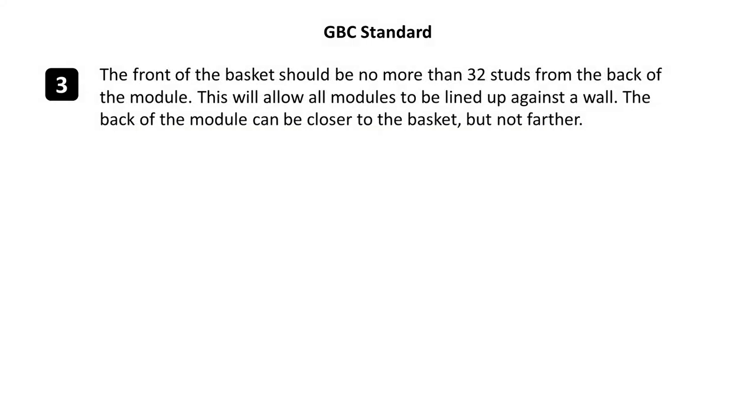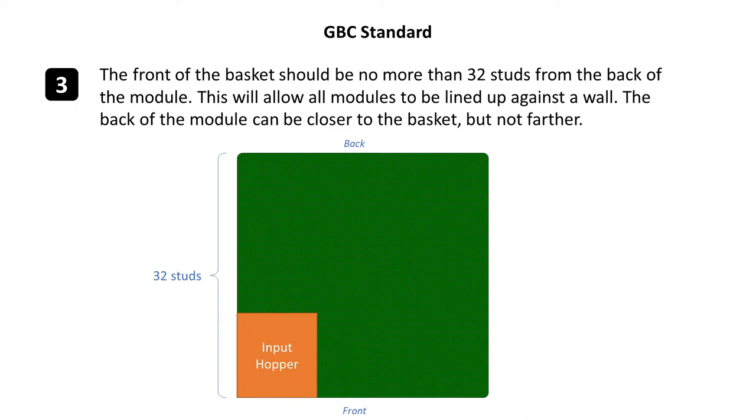Moving on, rule three. The front of the basket should be no more than 32 studs from the back of the module. This will allow all modules to be lined up against a wall. The back of the module can be closer to the basket, but not further.